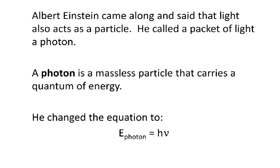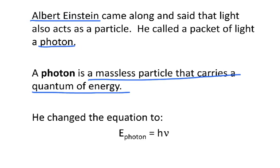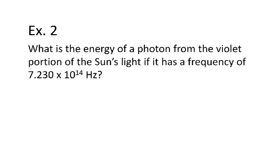Then came Einstein, who studied light and said not only does it act like a wave, but it also acts like a particle, which he called a photon. A photon is a massless particle that carries a quantum of energy. He changed the equation to E-photon, but really it's still E equals hν — it's Planck's constant times the frequency. No matter what you call E, whether it's a quantum of energy or a photon of energy, it's the same equation.